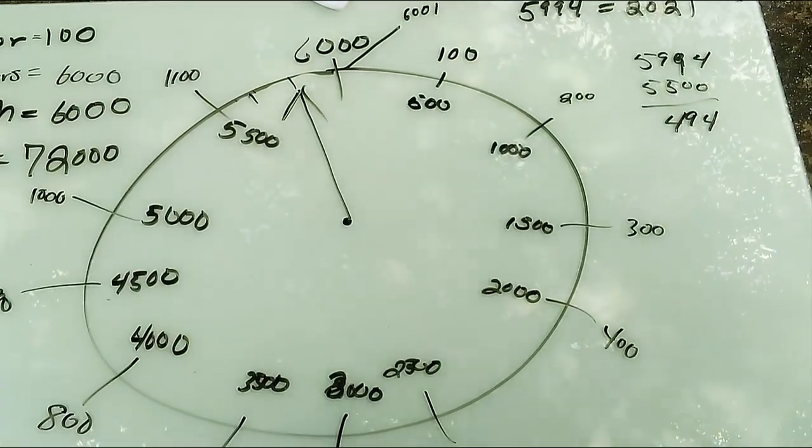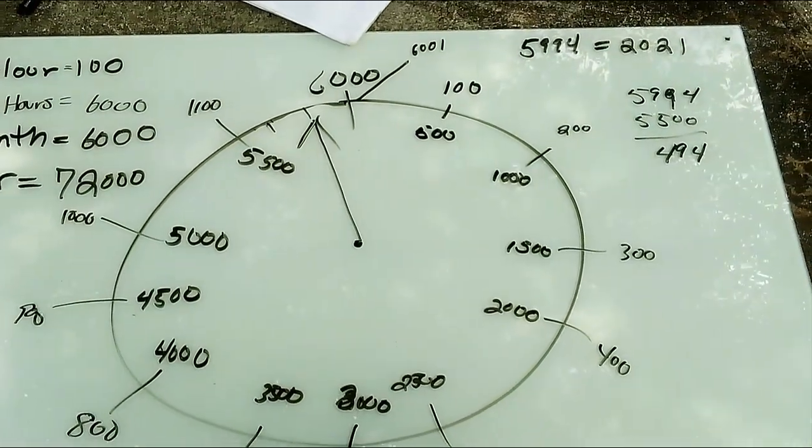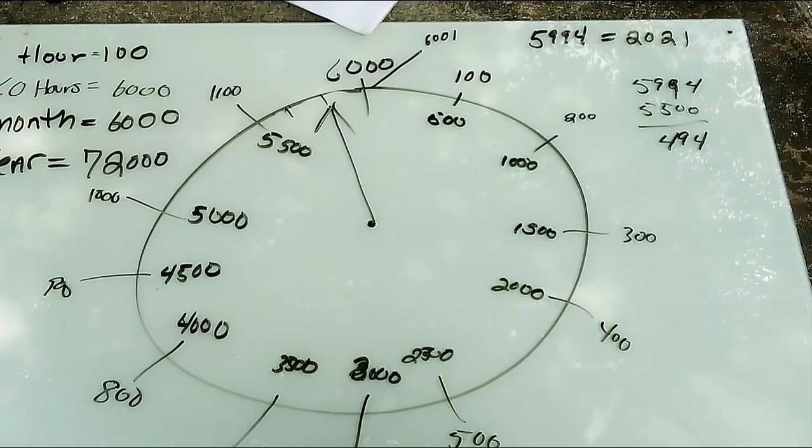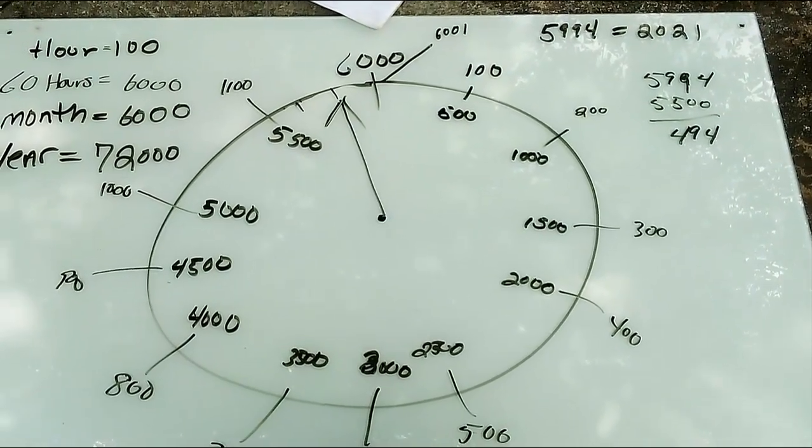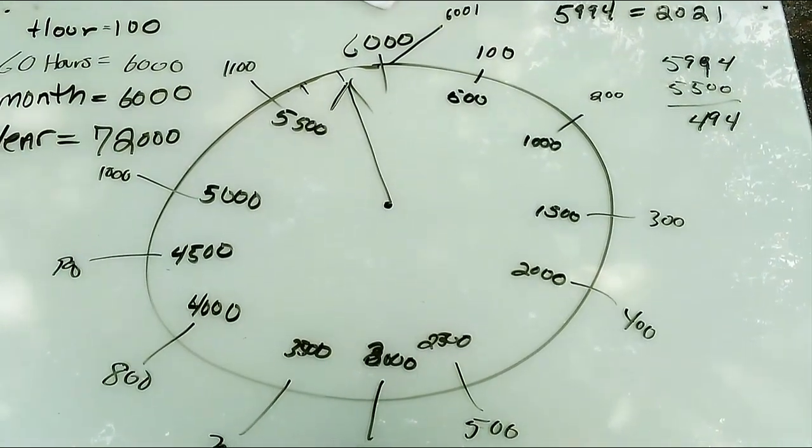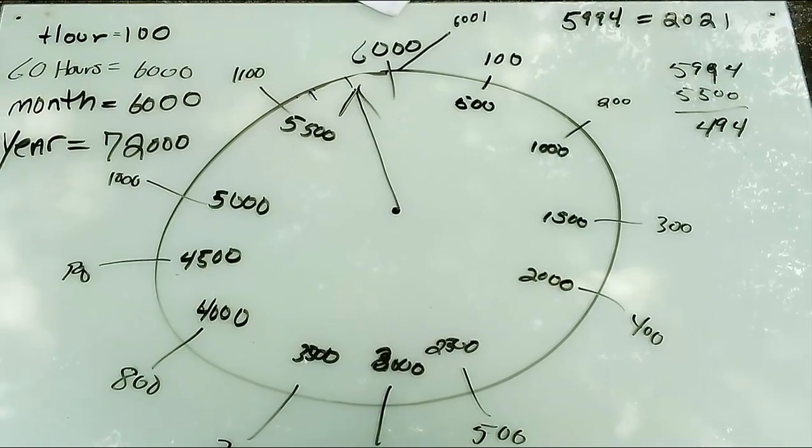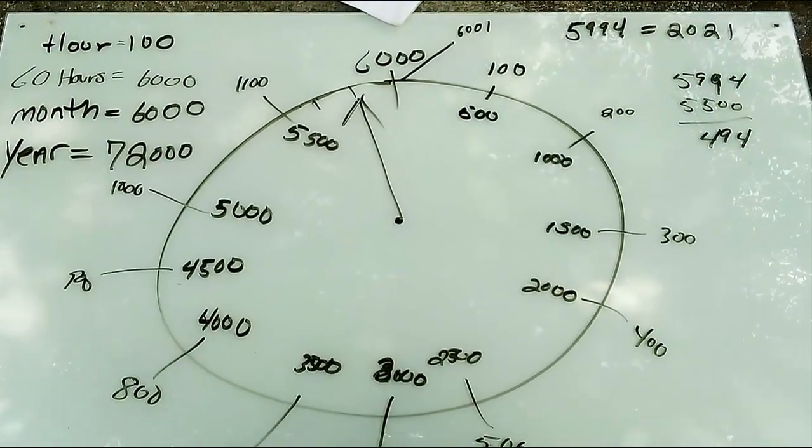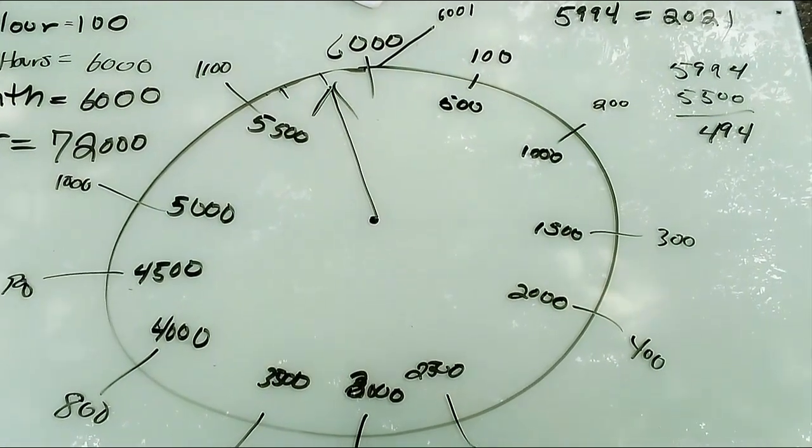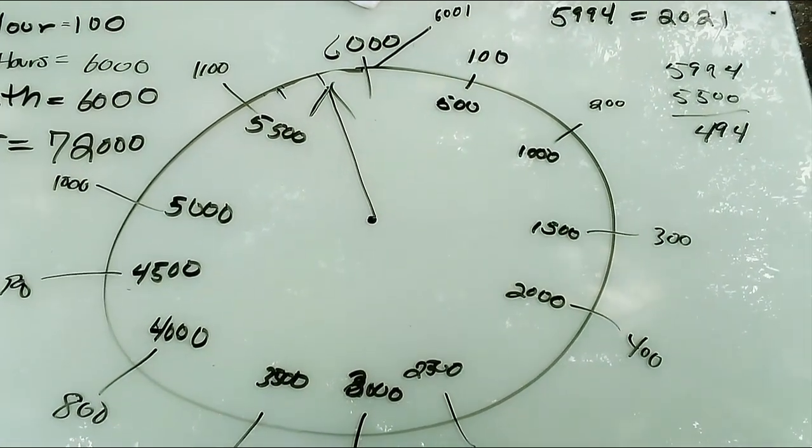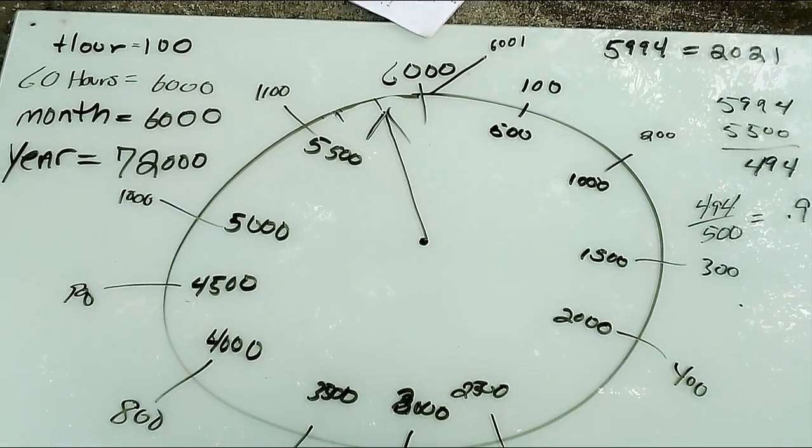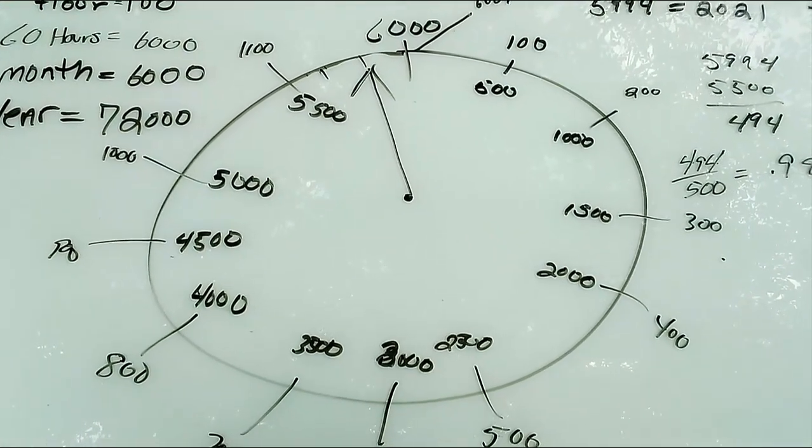So the 11th hour would have began the year 5,500 from the creation of Adam. And since we're in the year 5,994, we're a long ways past the 11th hour. So let's see what hour we're in. If we take 5,500 from 5,994, we end up with 494 years. So 494 divided by 500 equals about 0.98.